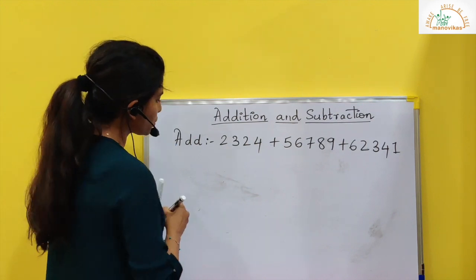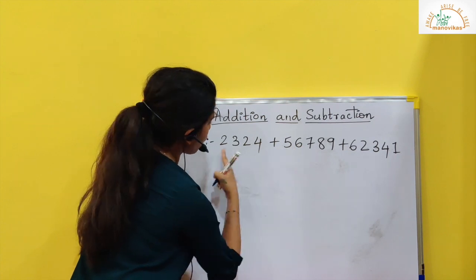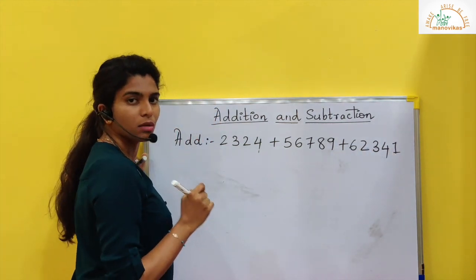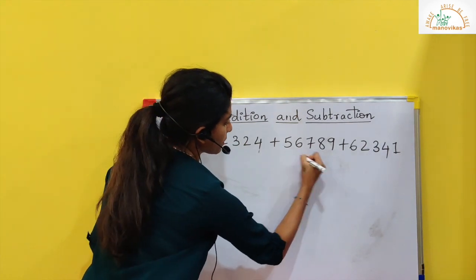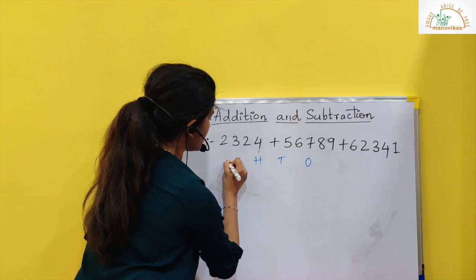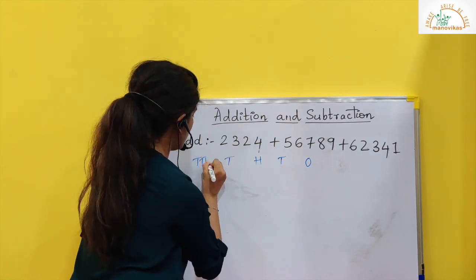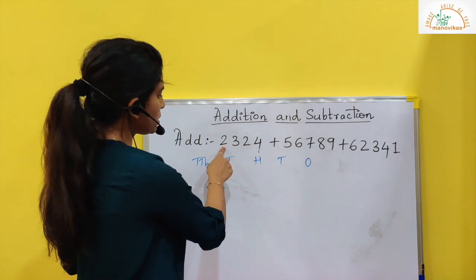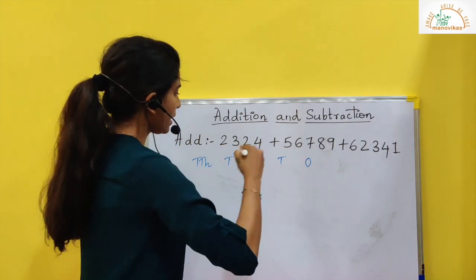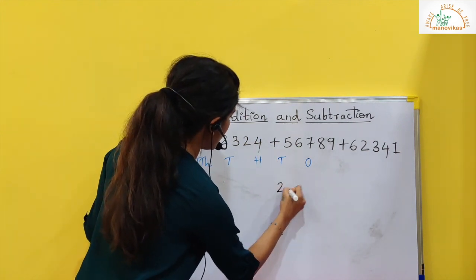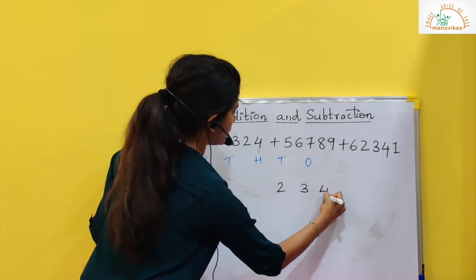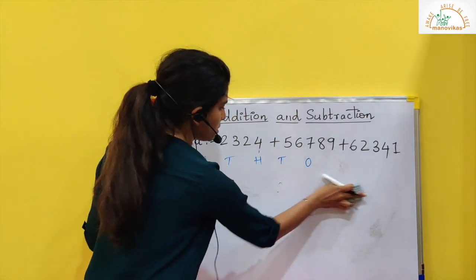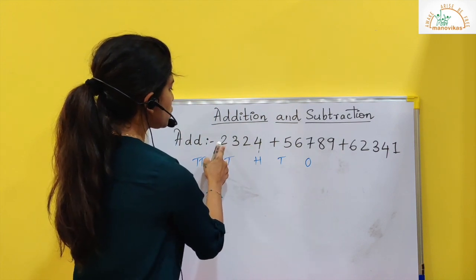Now first thing you will do is put the place value. Let's put the place value. So how many digits are here? 1, 2, 3, 4 — 1, 2, 3, 4, 5 — 1, 2, 3, 4, 5. So 5 digits. That means I have to put up to 10,000. So I will put the place value here: ones, 10s, 100, 1000, 10,000. And I will place the numbers below the place values. Now here it is 2, 3, 24.